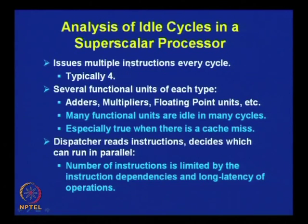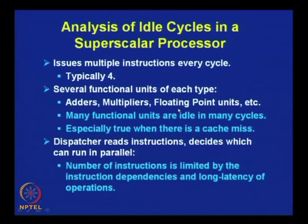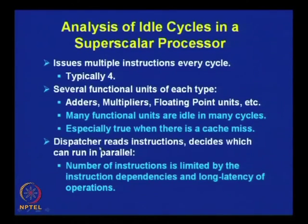Let us now have some analysis of idle cycles in a superscalar processor. Typically 4 instructions are issued, and a superscalar processor can have different types of functional units like adders, multipliers, floating point units, and branch units. Many functional units are idle in many cycles. This is particularly true when there is a cache miss — whenever there is a cache miss, until the pipeline is refilled with a new set of instructions, the functional units remain unutilized.